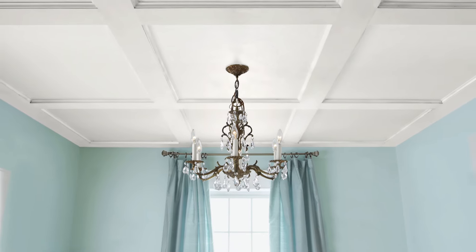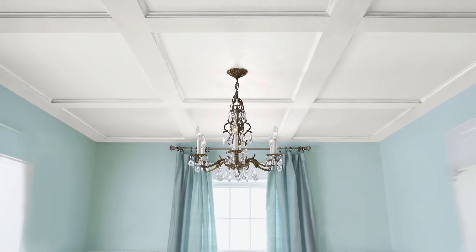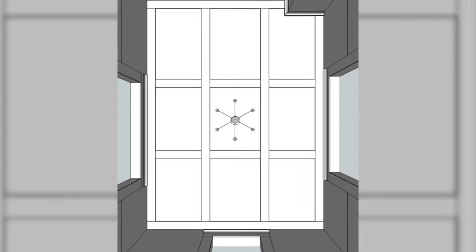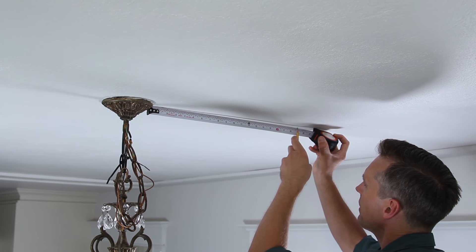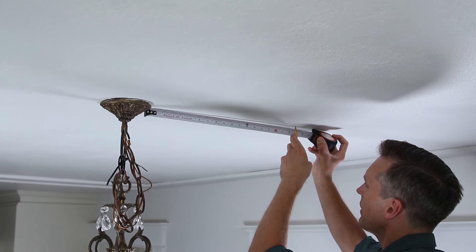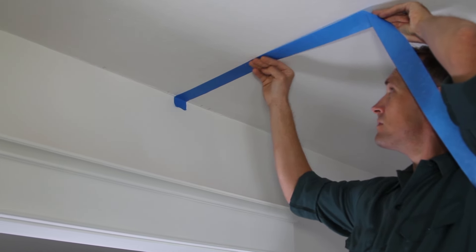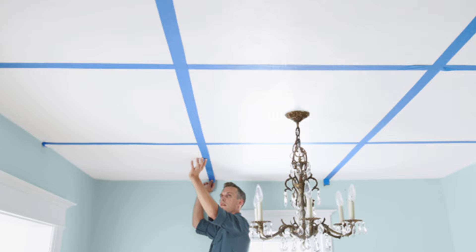Now, you want to plan your design around lights and major features in the room. We centered our nine coffer grid around an existing chandelier. To get started, measure and mark where the beams meet the walls. Then use blue tape to simulate the beams to see how your design will look.